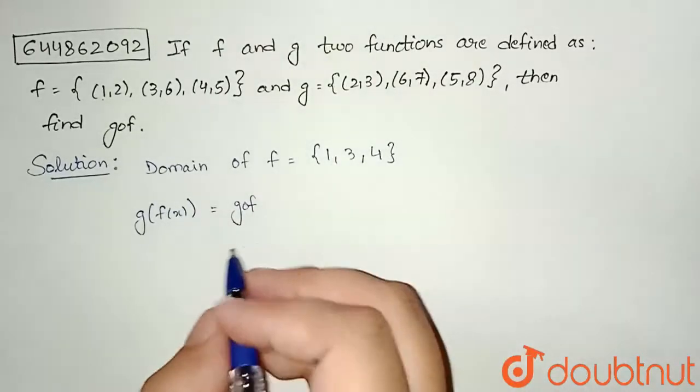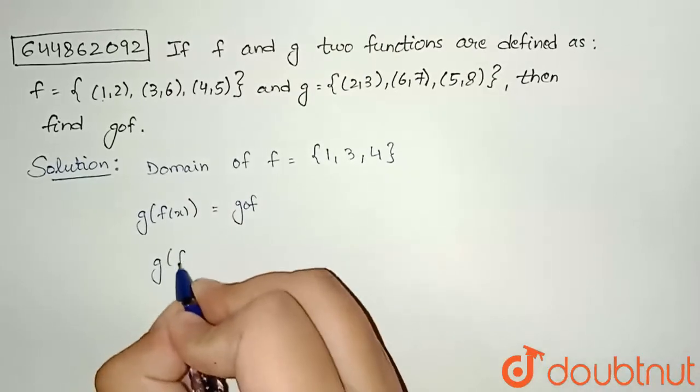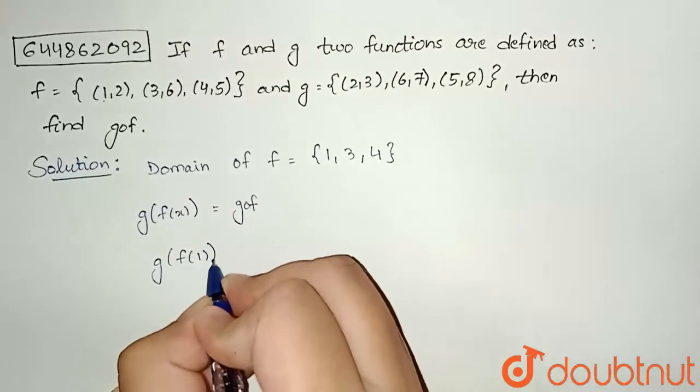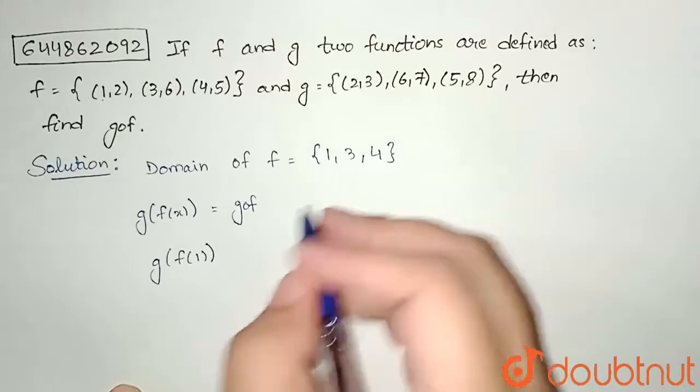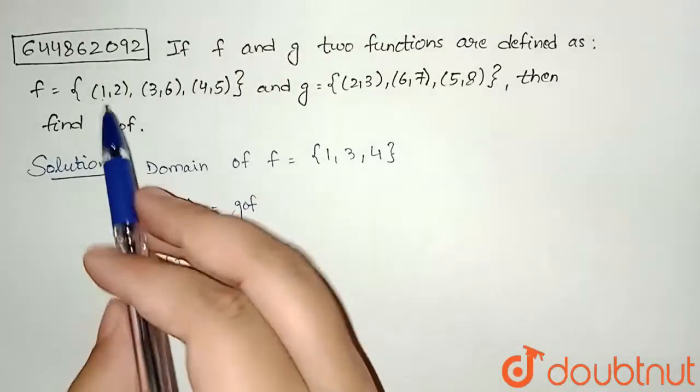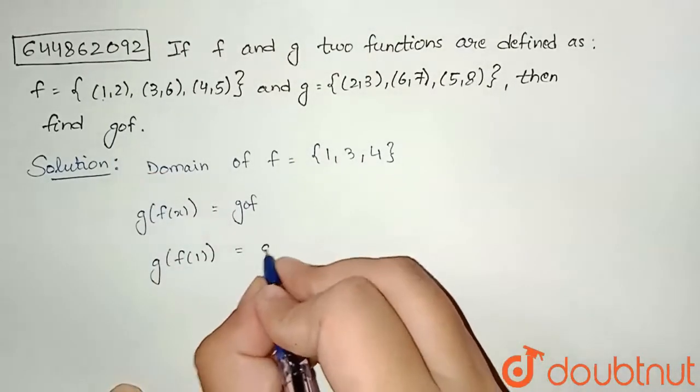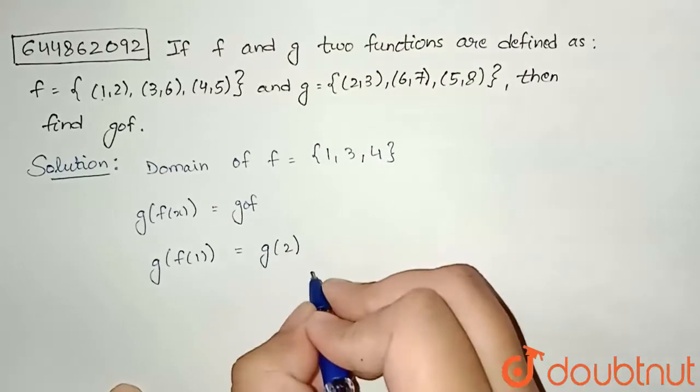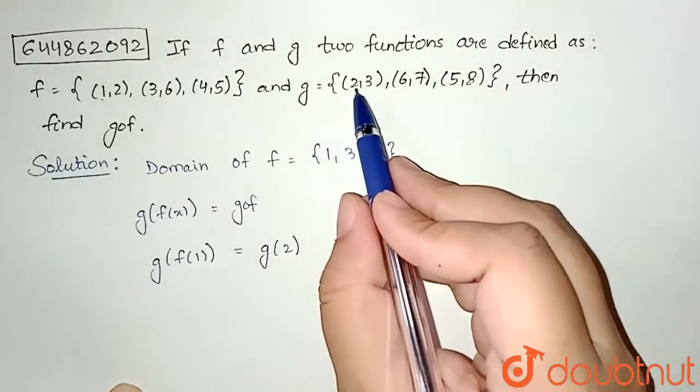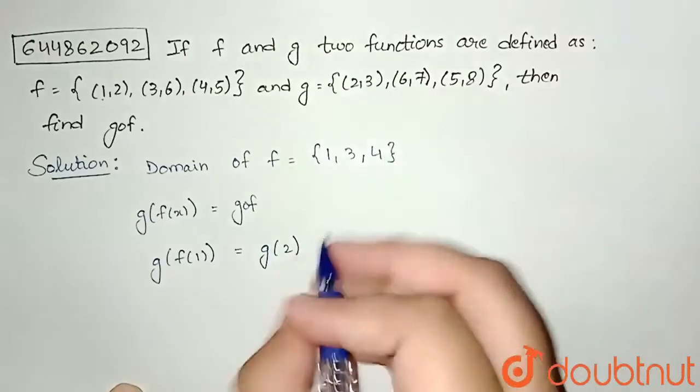So g of f of 1, first of all we will take because in domain I have 1. So f of 1 is how much? 2. So I can write g of 2. And g of 2, I can see, for g of 2 I have the value 3, so this will be 3.